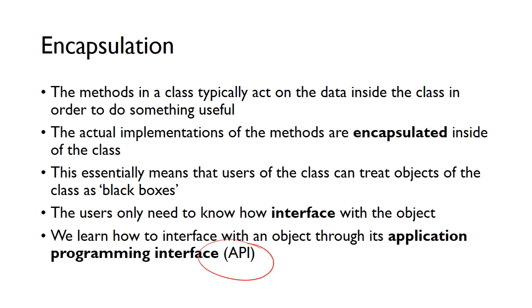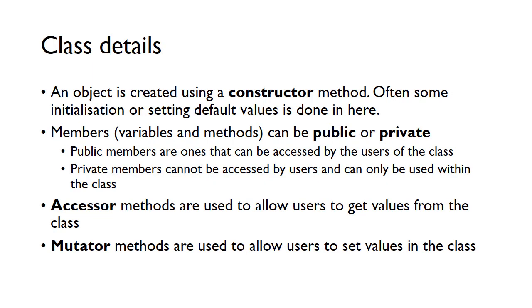The API defines the methods and the data we can interact with in the class. When you make a class you tend to have a constructor method — this is where the object is constructed. Inside the constructor we often do some initialization, set default values, and so on. Then we create our member variables and member methods. These can be public or private. Public members are ones that can be accessed by users of the class, and private members can't be accessed by users — you can only use them within the class.